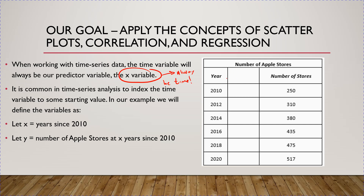Whatever your time variable — in this case it's the year — it's common in time series analysis to index the time variable to some starting value. So instead of saying X is 2010, in our example we define the variable X as years since 2010. So 2010 is zero years since 2010, 2012 is two years, 2014 is four years, 2016 is six, then eight, and 2020 is 10 years since 2010. Very important.